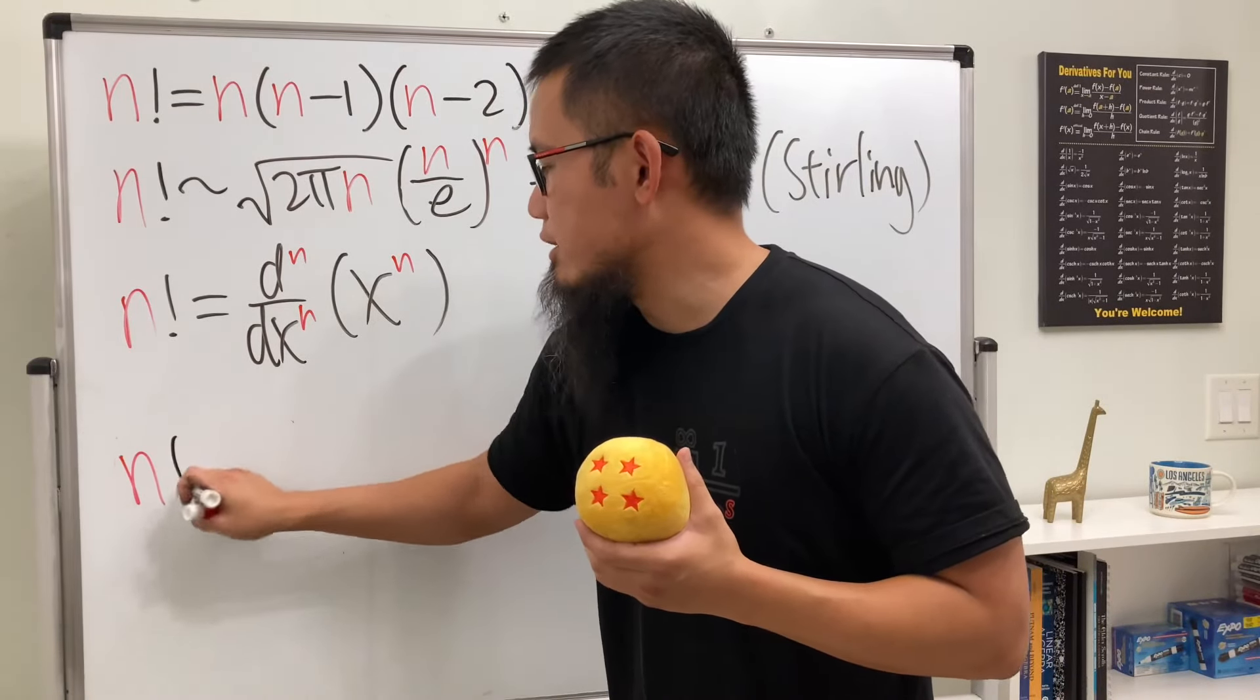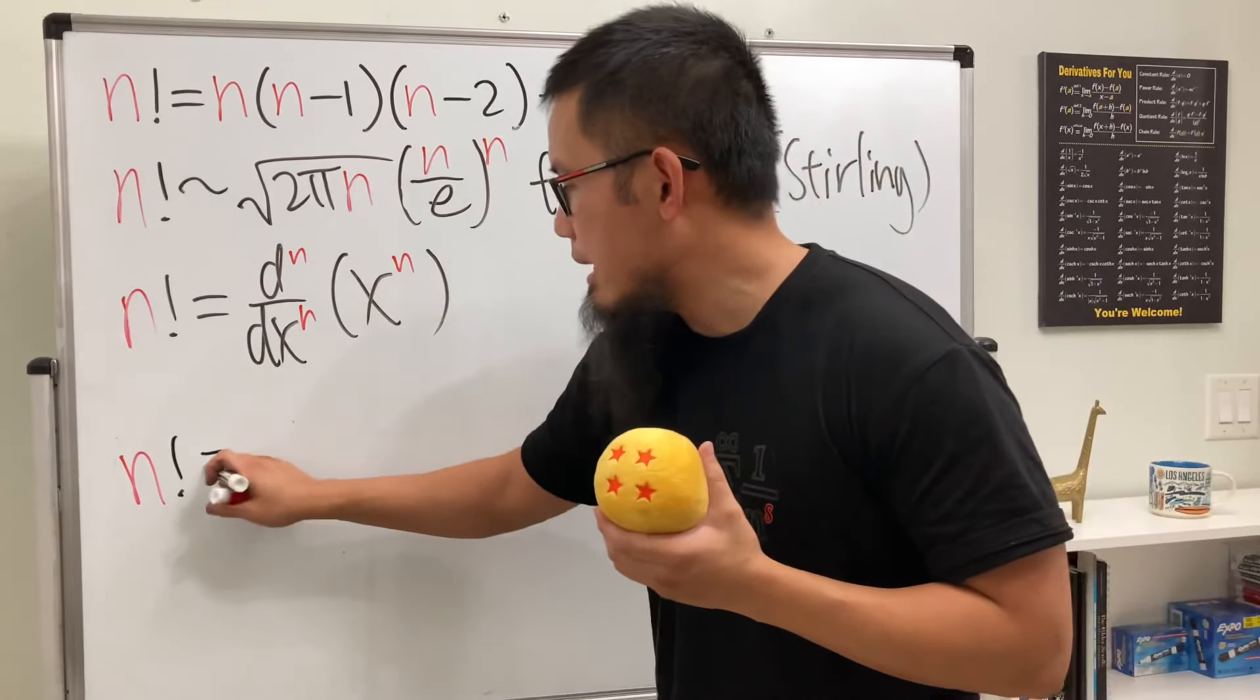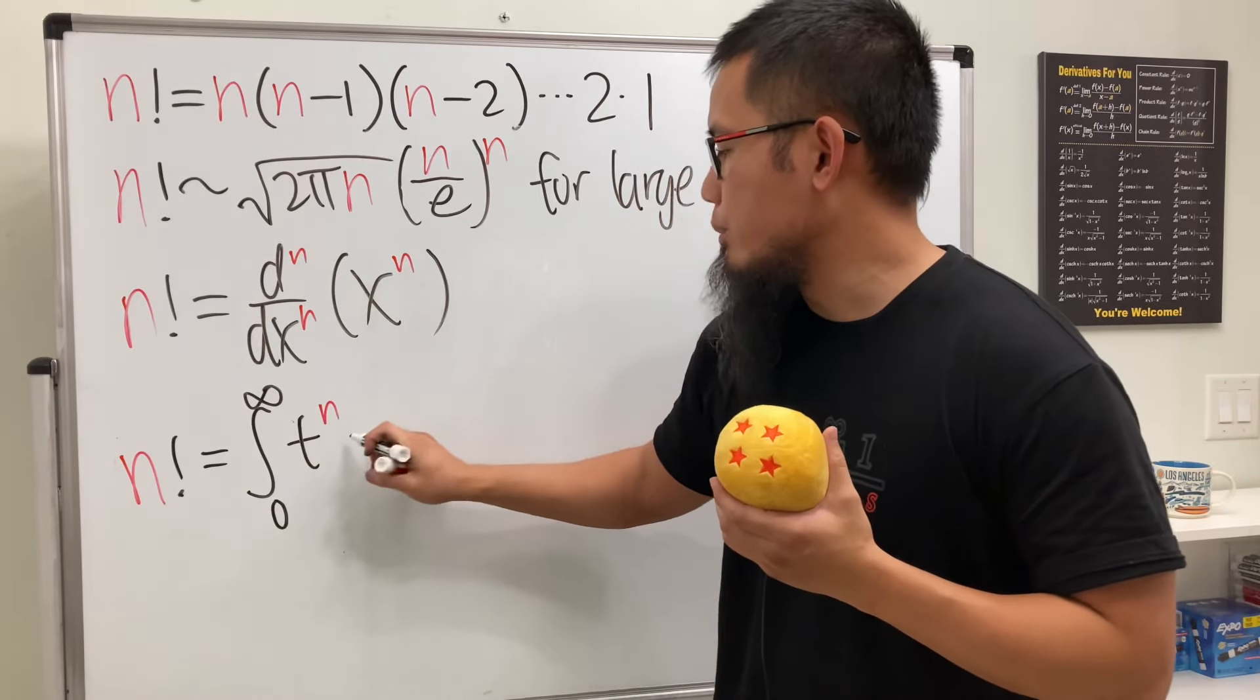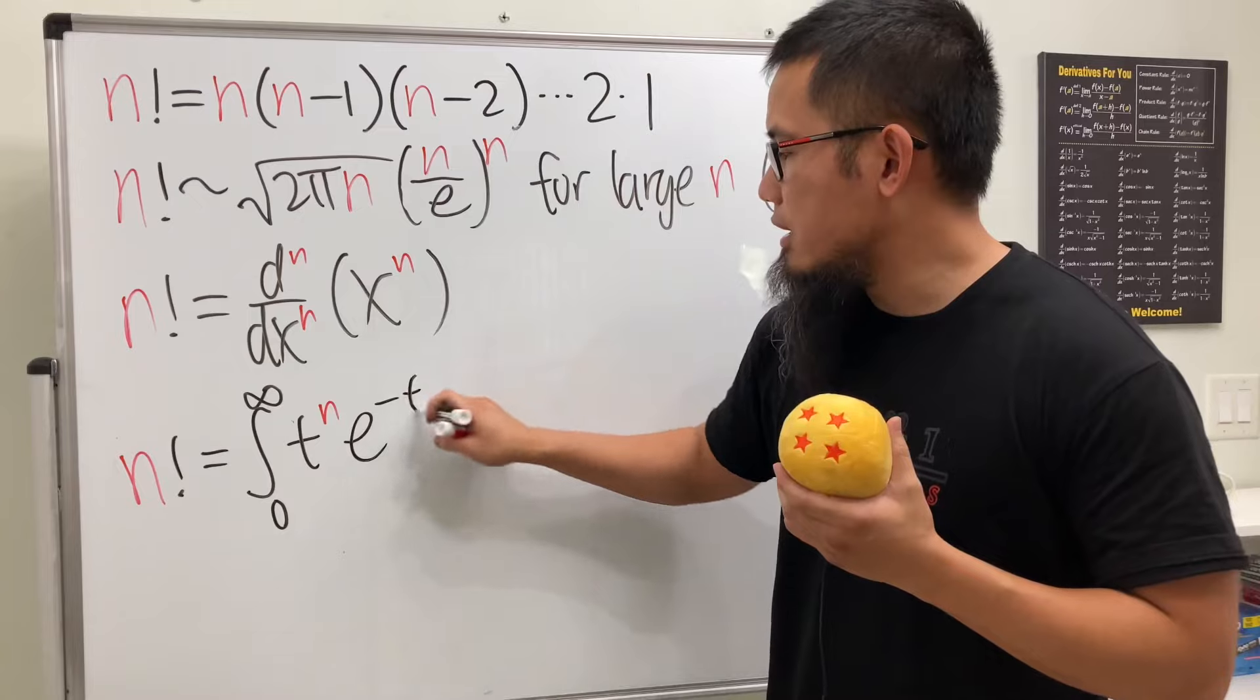And of course, after the derivative, let's talk about integral n factorial. It's the same as the integral going from 0 to infinity, t to the n's power, and we multiply by e to the negative t dt.